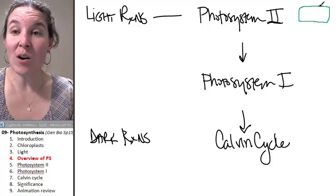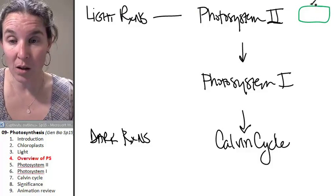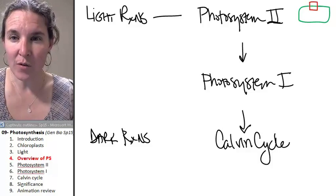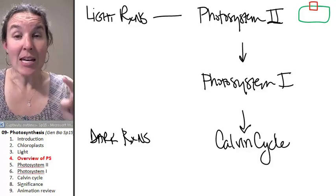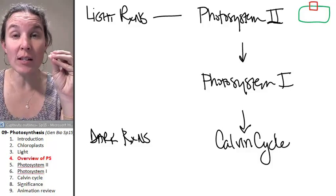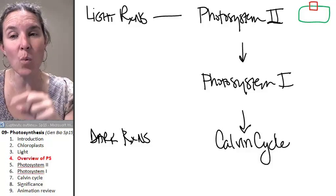Photosystems are found embedded in the wall of a thylakoid. So, if I were to go like this, not in the wall of the chloroplast, the total chloroplast. It's in the wall of the thylakoid.